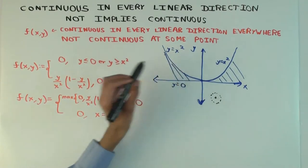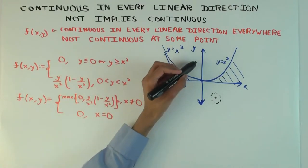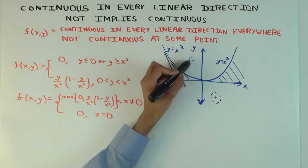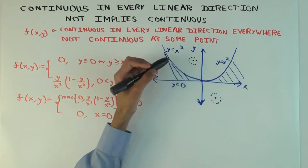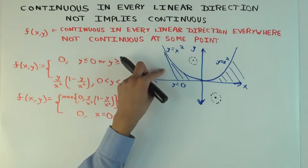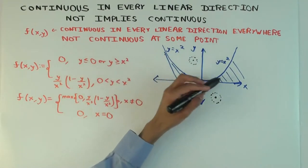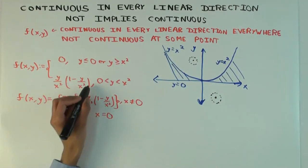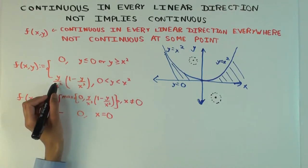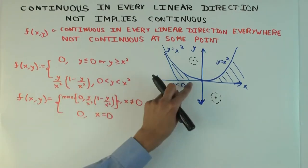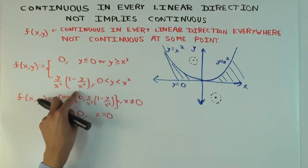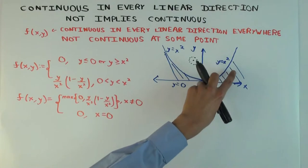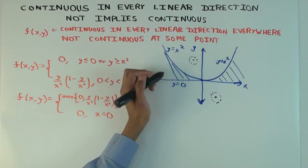What about above the y equals x squared line? Also zero — because you take any point there, it's zero around that point. What does that leave? It leaves the shaded region. On the shaded region, it's this rational function, and that's continuous because x is not zero anywhere in the shaded region. So it's a rational function, it's well defined, and it's therefore continuous — rational functions are continuous.